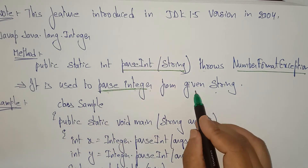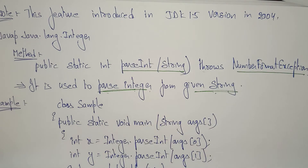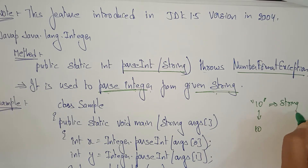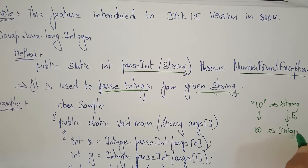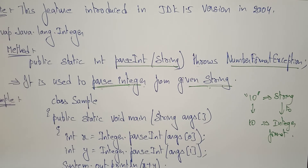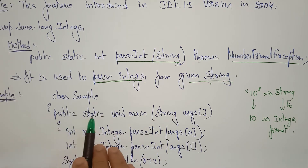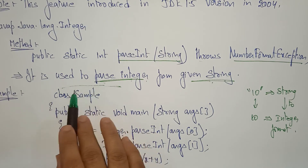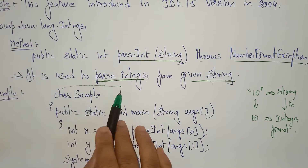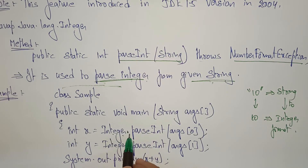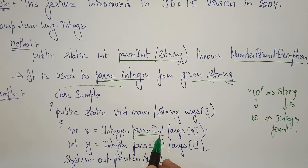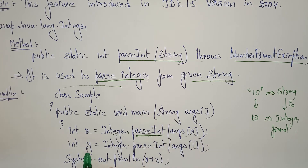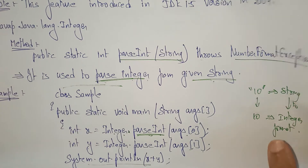parseInt is used to parse an integer from a given string — converting string format to integer format. In the program: class Sample, public static void main — int x equals Integer.parseInt. Here I didn't import static, so I must write Integer dot parseint. This converts the passed string arguments to integer, then adds them: parseInt(args[0]) + parseInt(args[1]), and System.out.println prints the result.